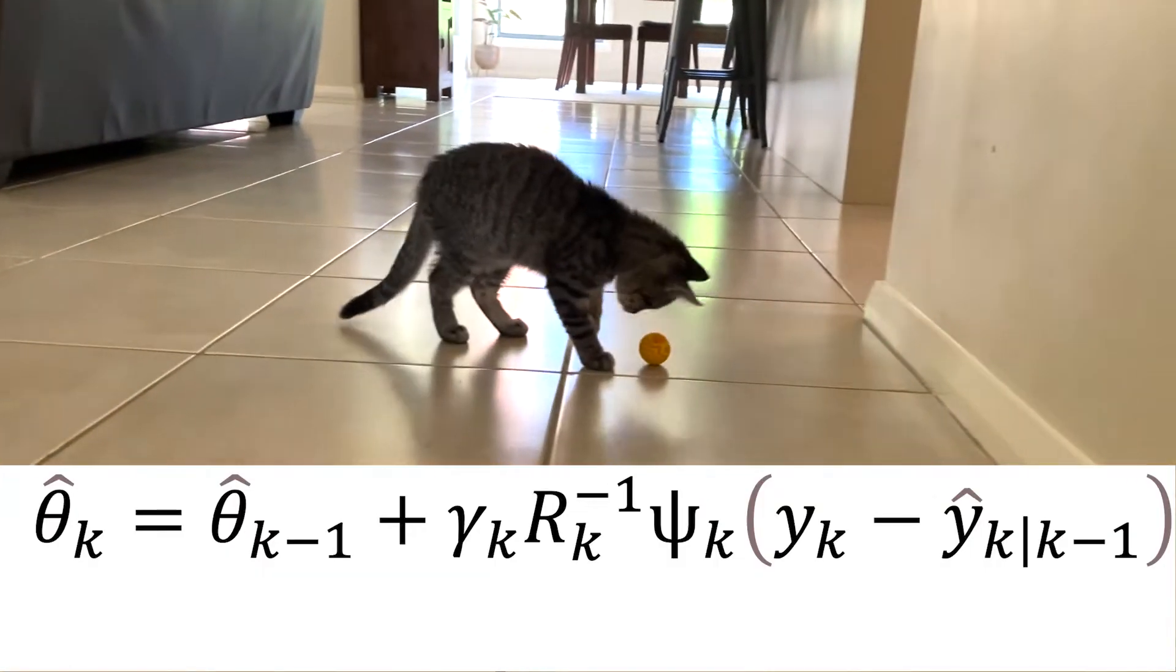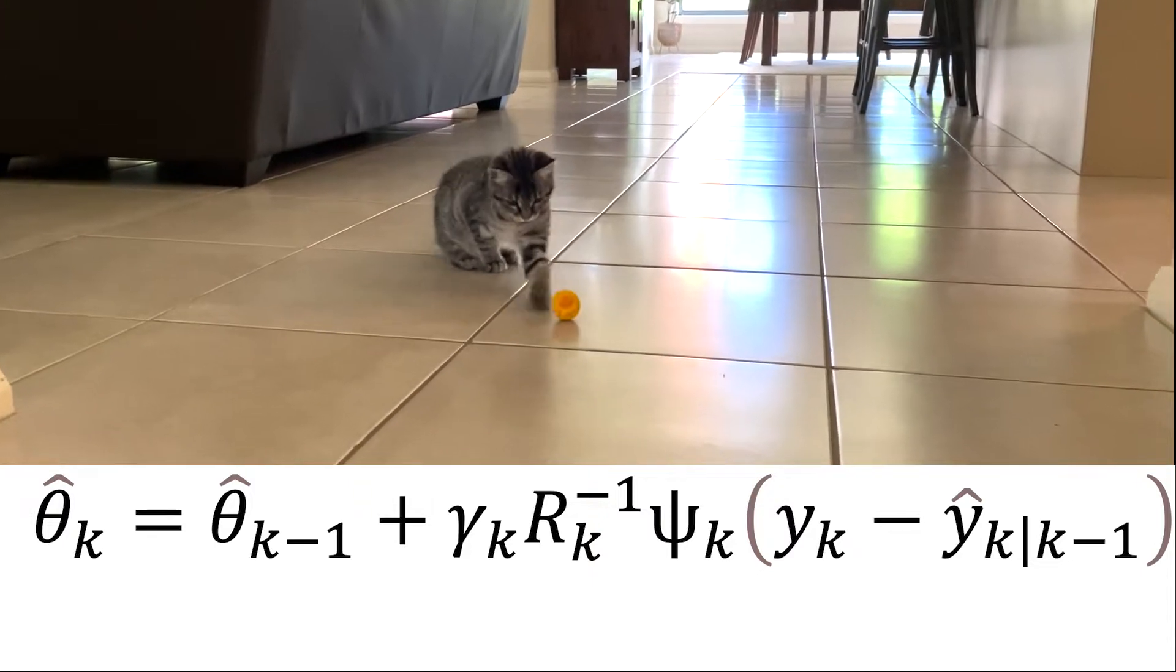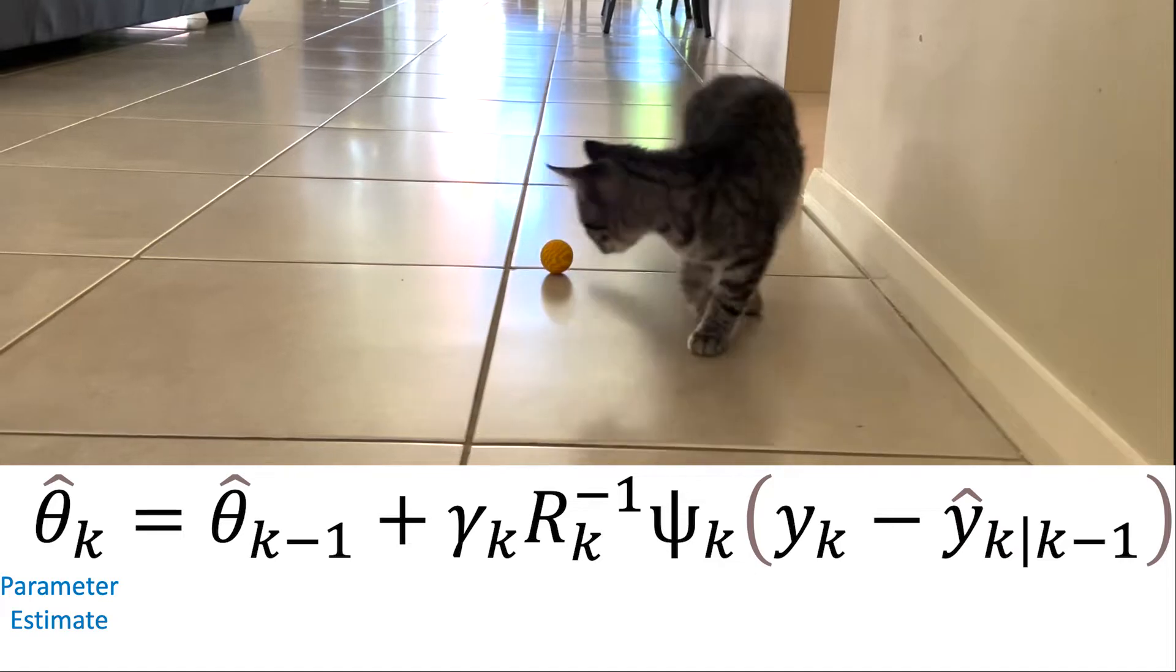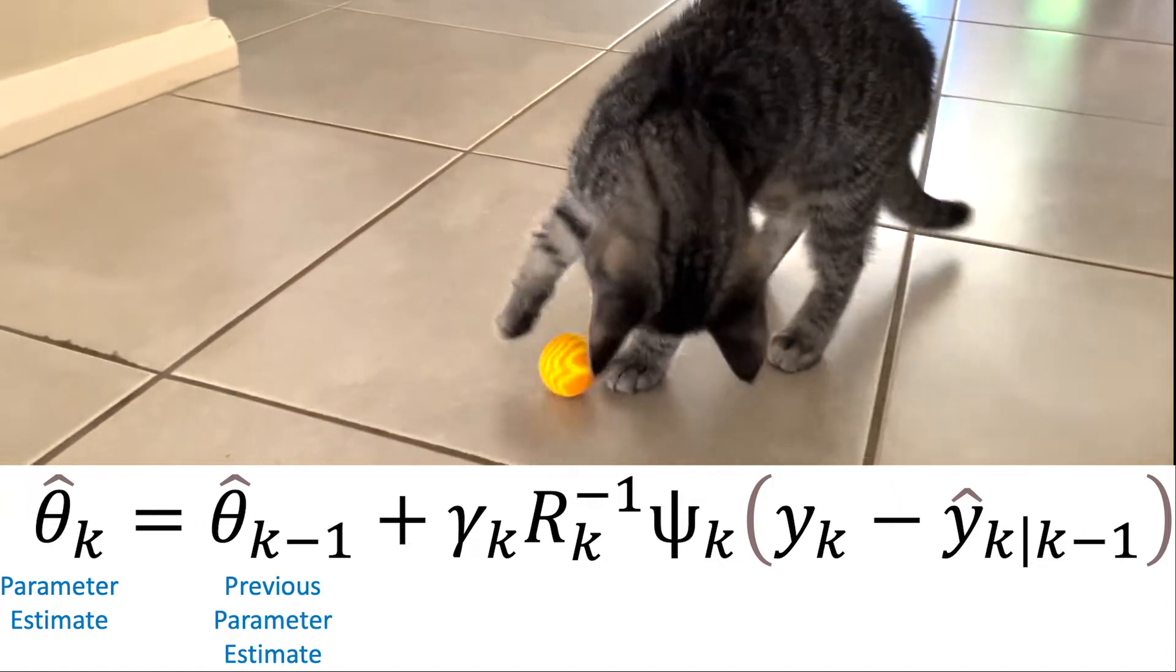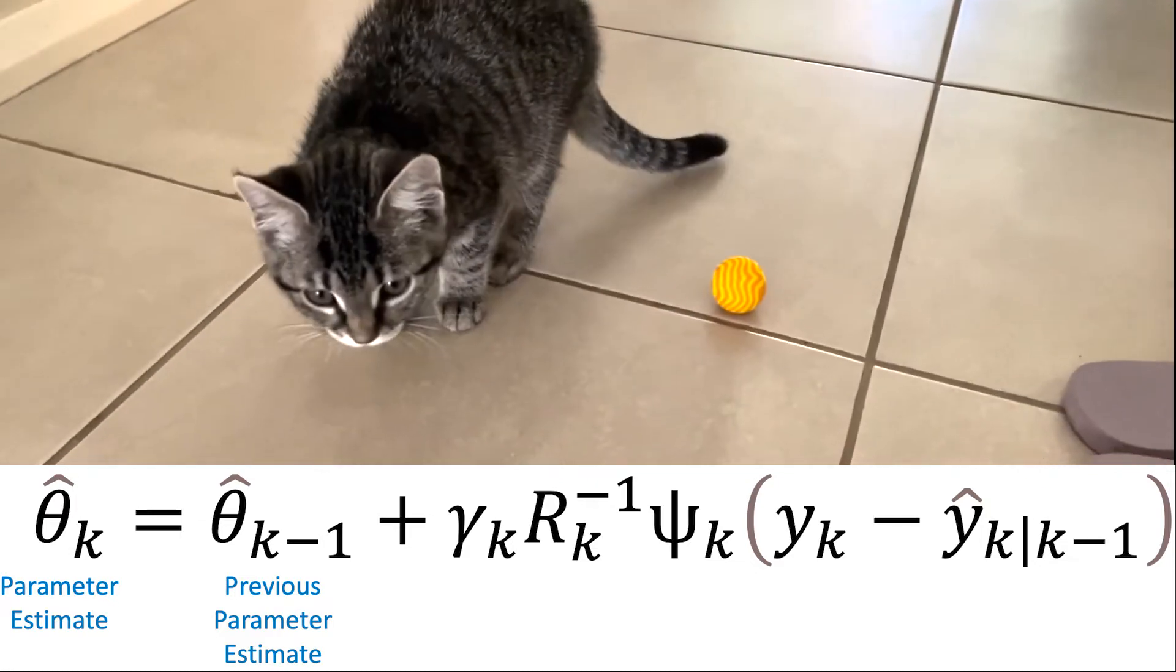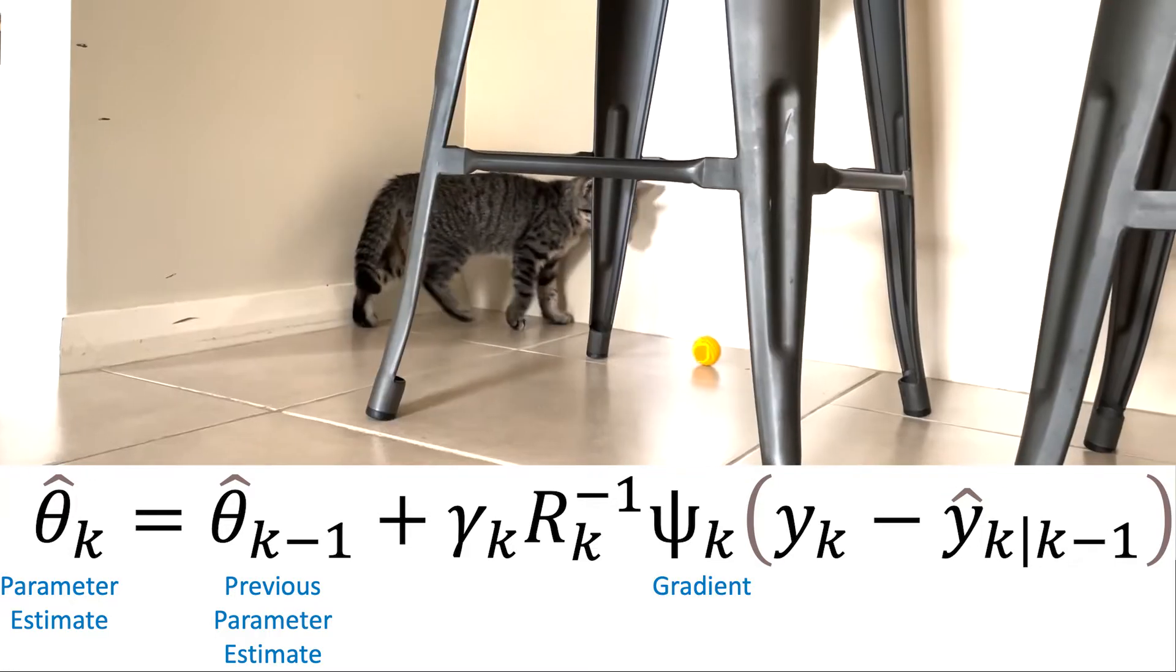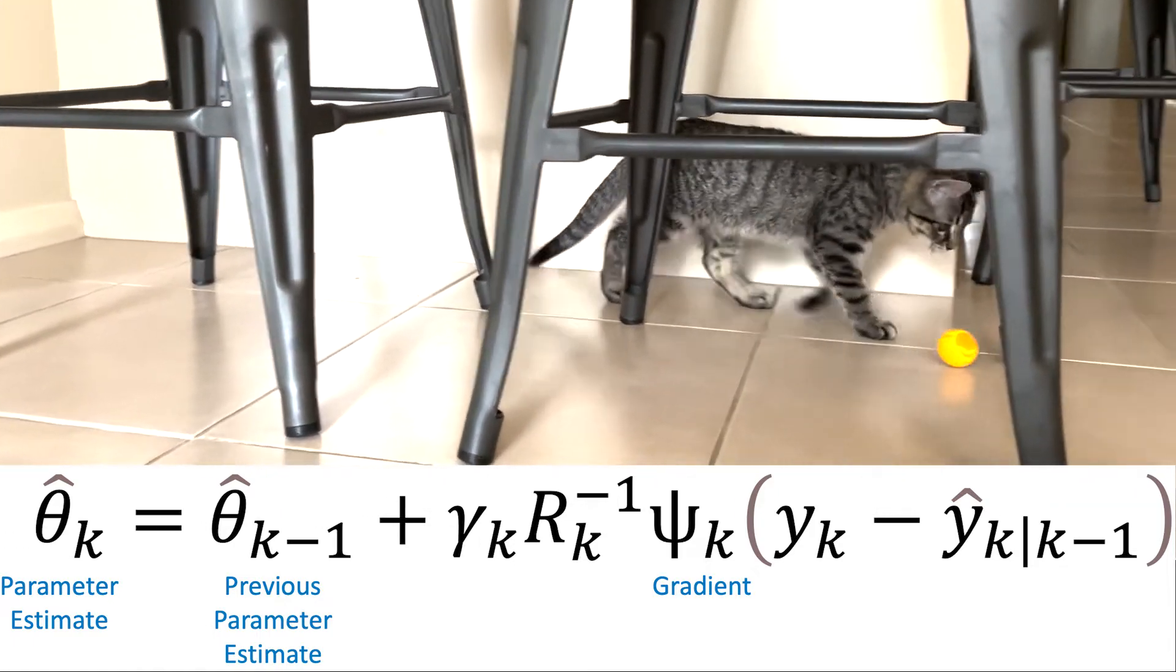Here's an equation for the way you update parameter estimates in this recursive learning algorithm. You have a parameter estimate theta hat at time k, and you update that by taking the previous estimate and adding a term to it. That term includes a gradient term to go in a direction down the slope of the cost function.